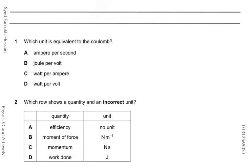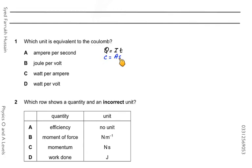Moving on to the next question, you have to identify which unit is equivalent to coulomb. We have the equation Q = It, from the definition of current I = Q/t, making Q the subject gives Q = I × t. So Q is in coulombs, I is in amperes, and t is in seconds, which shows coulomb equals ampere times second. Option A writes ampere per second (A·s⁻¹), but ampere is multiplied by second, not divided — so A is incorrect.